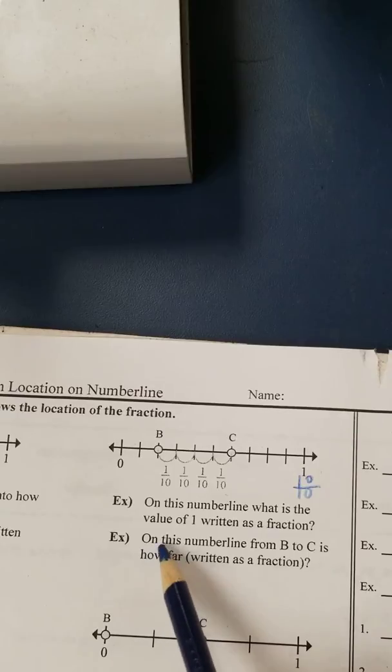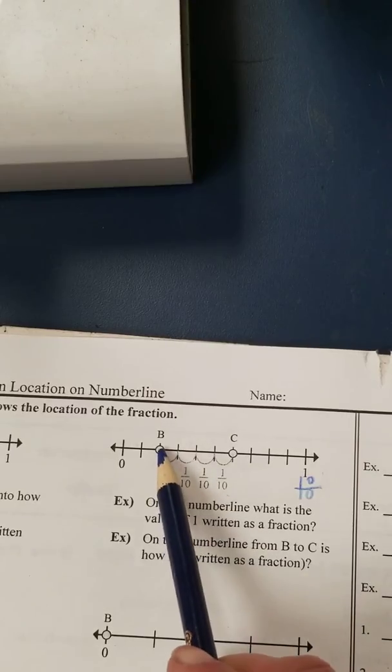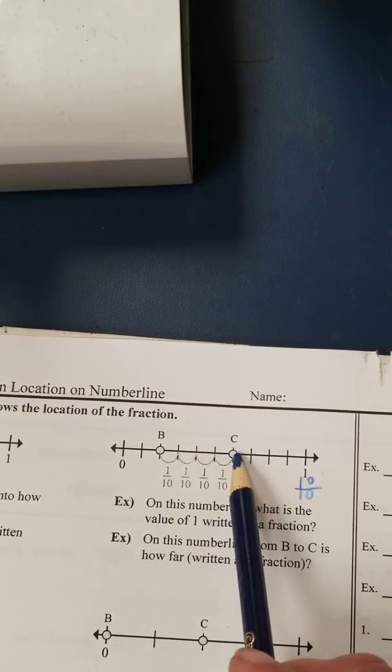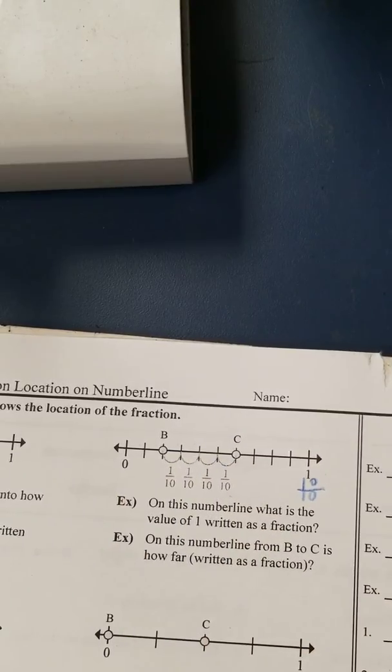The second part of this question asks, on this number line, from B to C is how far written as a fraction? So they want us to identify where B is, where C is, and how many pieces are between those two points.